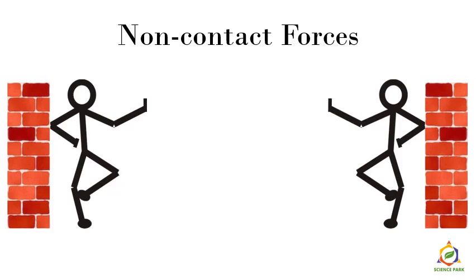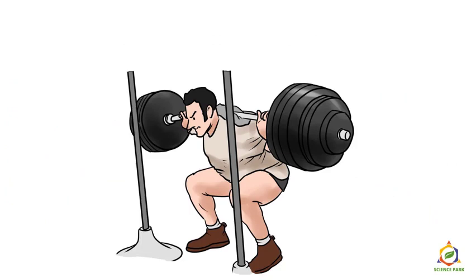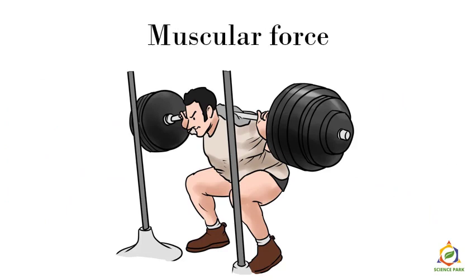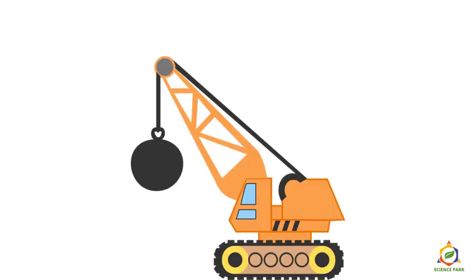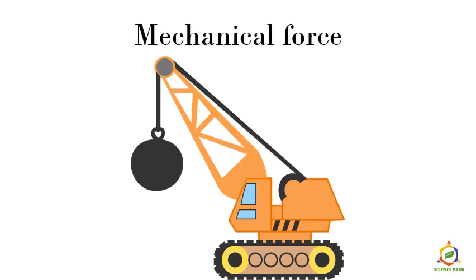We will start with the types of contact forces. Do you see a man lifting some weights? He is applying muscular force. This is a big, huge machine used to lift a lot of heavy weights, which definitely can't be done by us. This machine applies a force called mechanical force. Forces applied by machines are always called mechanical force.